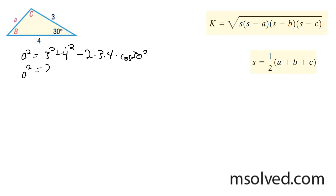This gives me a squared is equal to 25 minus 24 times 3 over 2, and I get a squared is equal to 25 minus 12 root 3. Finally a squared is equal to 4.21539 and then a equals 2.053.